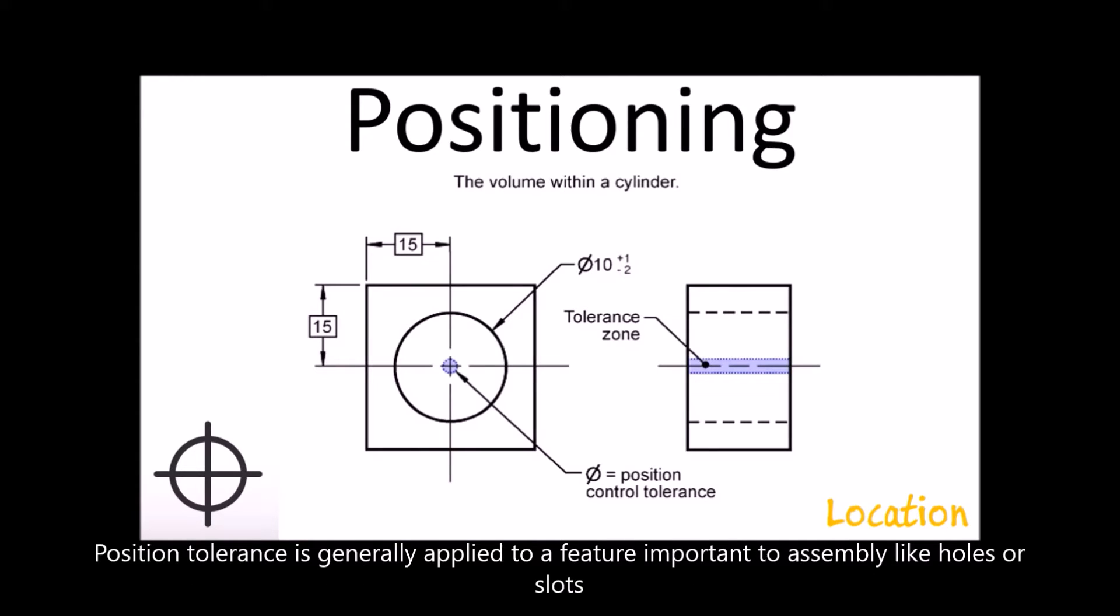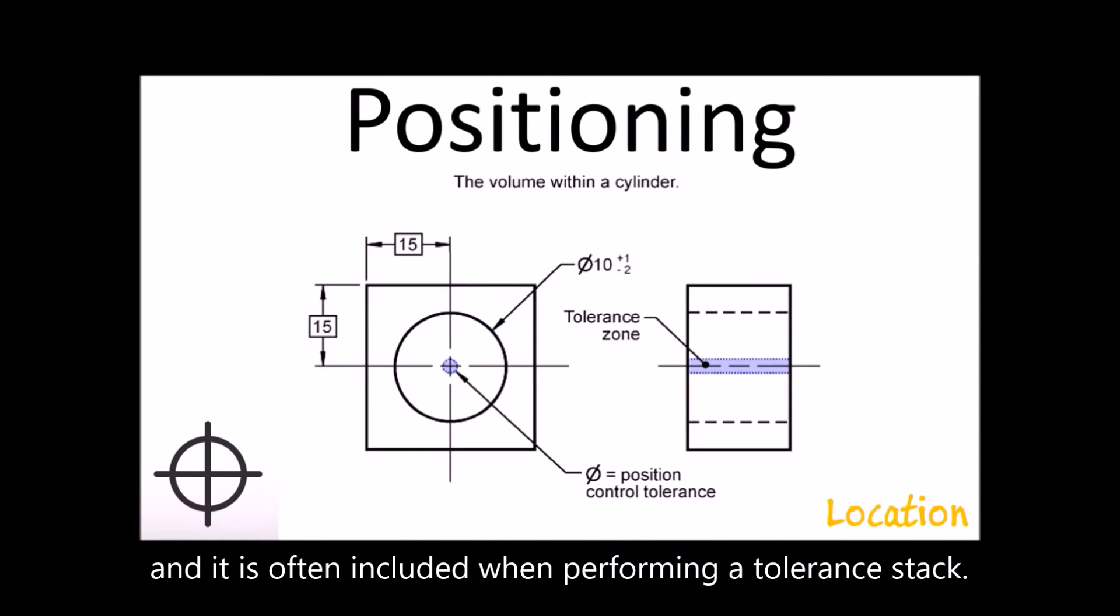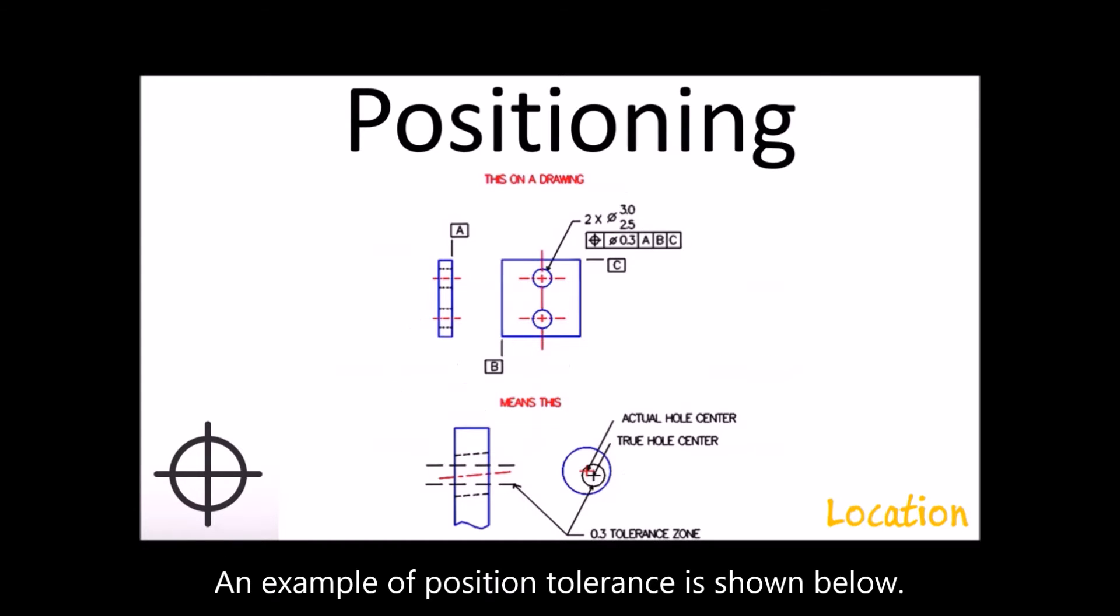Position tolerance is generally applied to a feature important to assembly, like holes or slots, and it is often included when performing a tolerance stack. An example of position tolerance is shown below.